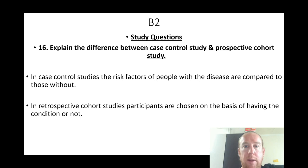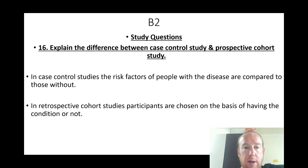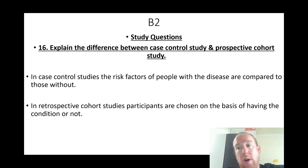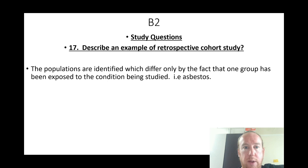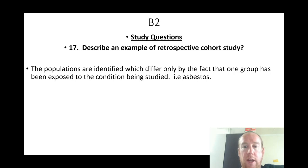Explain the difference between a case-control study and a prospective cohort study. In case-control studies, the risk factors of people with the disease are compared to those without. In retrospective cohort studies, participants are chosen on the basis of having or not having the condition — for example, populations identified which differ only by exposure to a specific condition, such as asbestos.